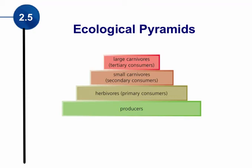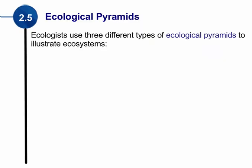Another way that we can show energy within an ecosystem is through an ecological pyramid. An ecological pyramid is a way to illustrate ecosystems. Ecologists use three different types of pyramids to show this illustration.